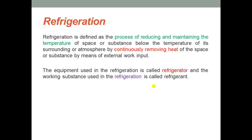The working substance used in the refrigeration cycle is called refrigerant. In refrigeration, heat is continuously extracted from the given space or substance by performing mechanical work and rejecting this heat to the surrounding atmosphere. This is achieved by means of a working medium known as refrigerant, which is a chemical substance including ammonia, carbon dioxide, methyl chloride, Freon, etc. The refrigerant in liquid state is made to circulate in a cycle through a series of events where it undergoes a change of phase from liquid to vapor and back to liquid state.